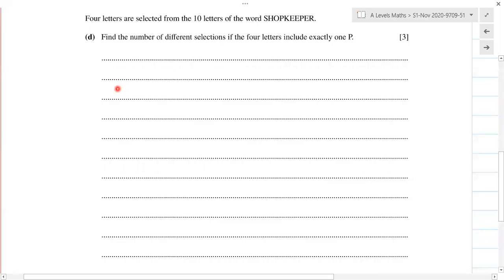Okay, question number seven, part D. Part D says find the number of different selections if the four letters include exactly one P. Now remember it says selections, so that means you're selecting and this is combination. Whenever it says choose or select, this is combination.